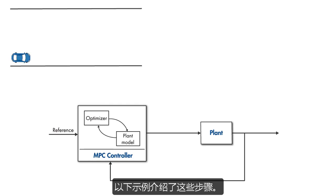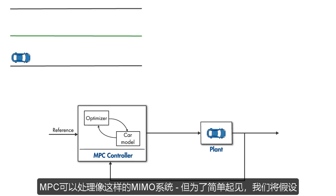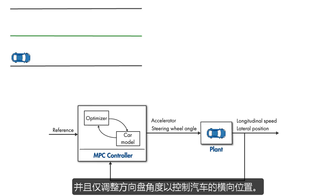The following example walks through these steps. Let's say that this is an autonomous car controlled by an MPC controller to keep it in the middle of this lane. MPC can handle MIMO systems like this one, but for simplicity, we'll assume that the accelerator is fixed, the longitudinal speed is constant, and only the steering wheel angle is being adjusted to control the lateral position of the car.